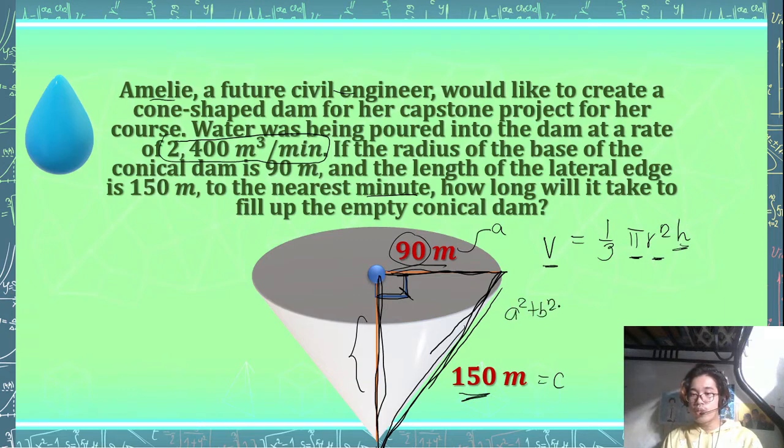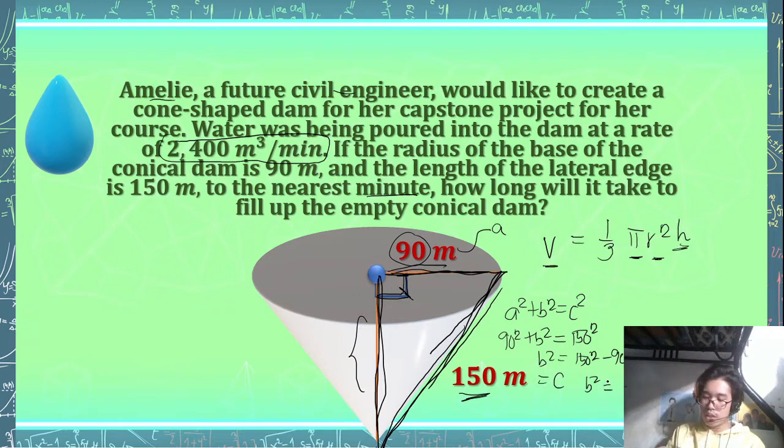We can say that a² plus b² is equal to c². And then we can write here that 90² plus b² is going to be equal to 150². And then we can transfer the 90² on the other side. So what's 150² minus 90²? 150² minus 90², so that should give us 14,400. And then if we take the square root of both sides, that should give us 120.